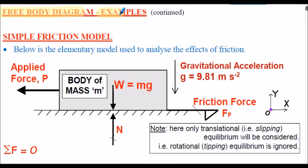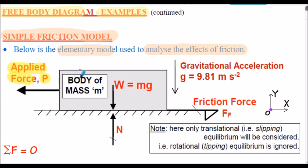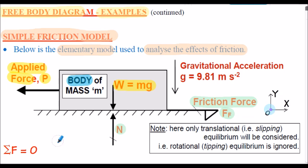Here's an extract from a previous presentation related to our simple friction model. This is the limiting condition where we have an applied force P to our body of mass M, which generates a weight force W equals MG. Our model reacts these applied forces with the friction force in the opposite direction to P and a normal force that's the reaction to the weight force from the surface. This is the limiting condition when the body is just about to move horizontally, applying Newton's first law — summation of all forces equals zero.